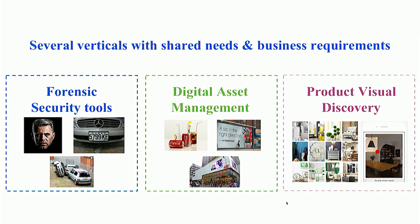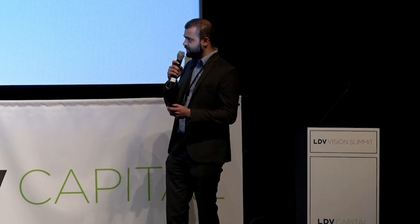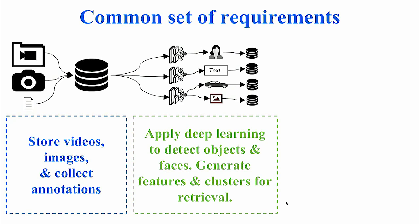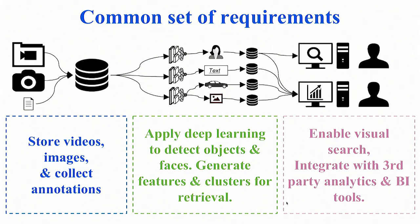Consider three different verticals: forensic security tools, digital asset management, and product visual discovery. Even though these three fields look different, they have significant shared overlapping needs and business requirements. In each one, you need to store videos and images, collect annotations, apply a deep learning pipeline that might include object detection, face recognition, indexing, and clustering for visual search. Eventually you want to provide this visual search to customers and integrate analytics into third-party BI tools.